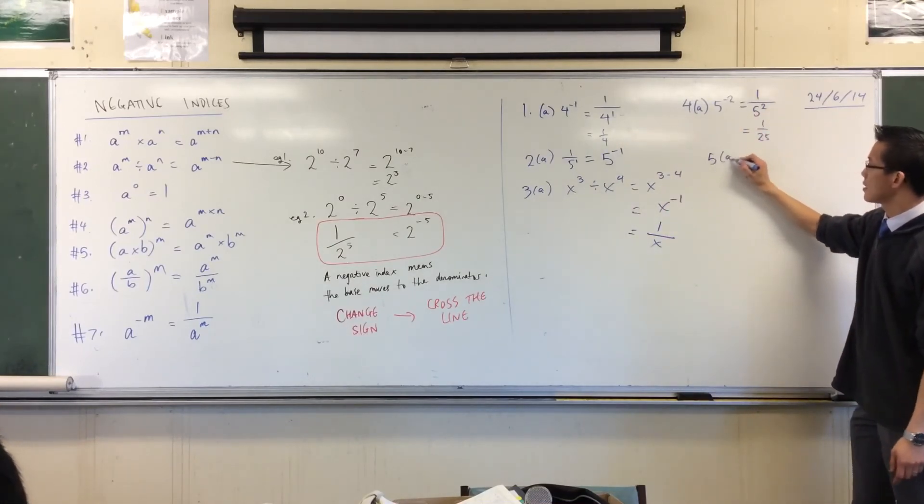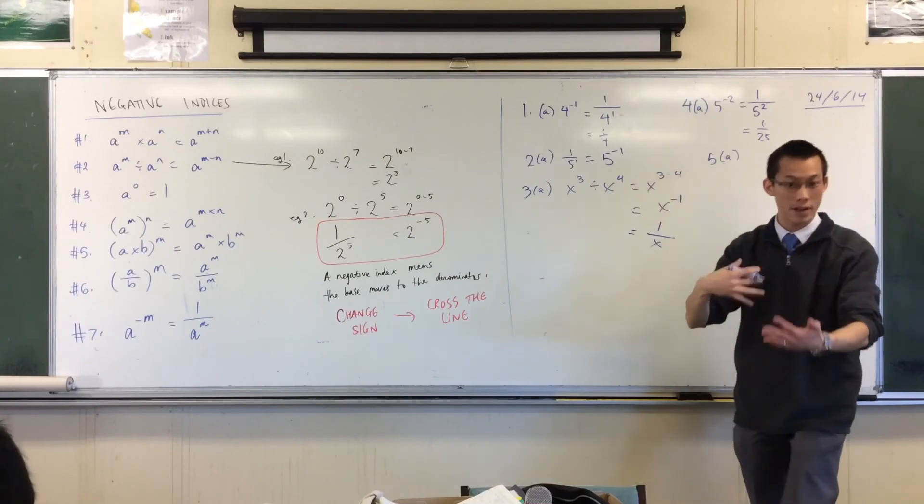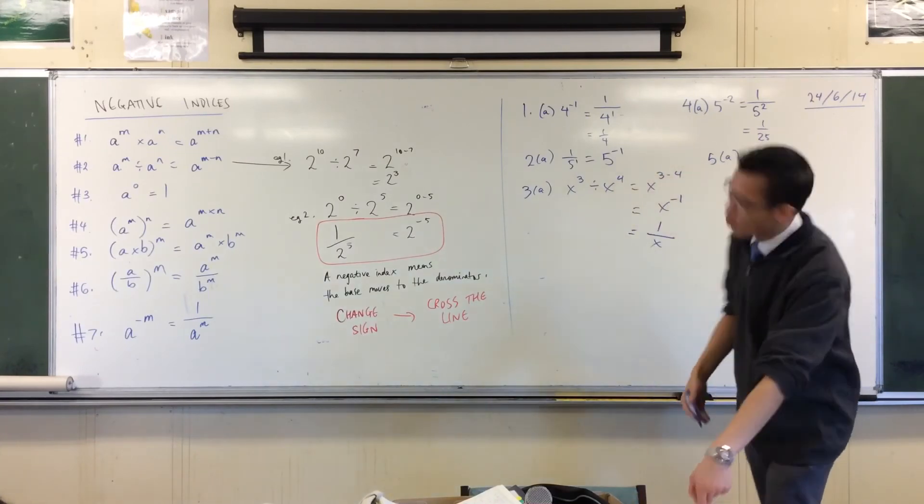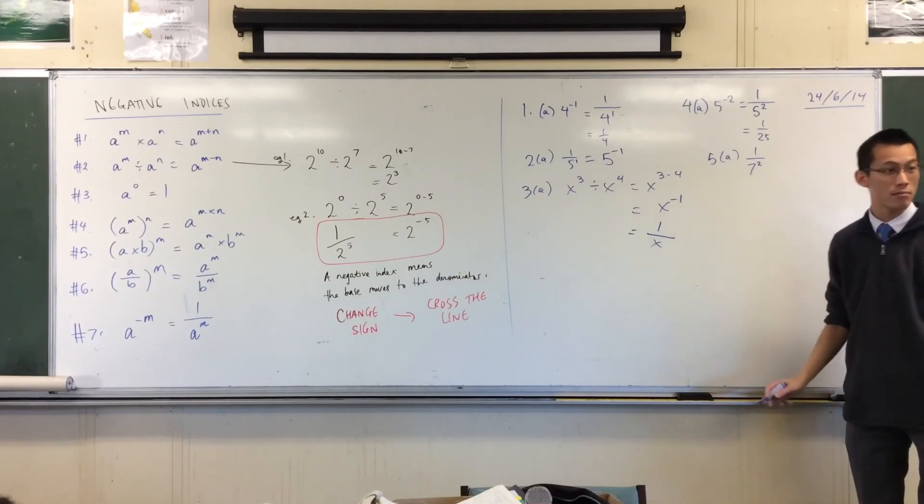When you go to 5, it's just like this - we're going in the opposite direction. You've got 1 over 7 squared, that's 1 over 49.